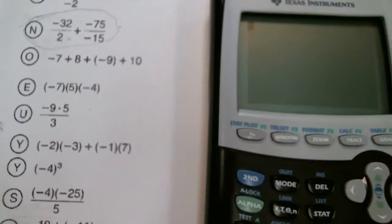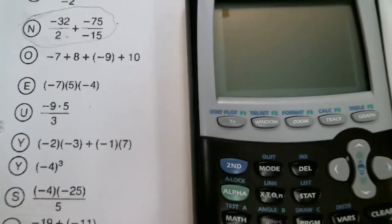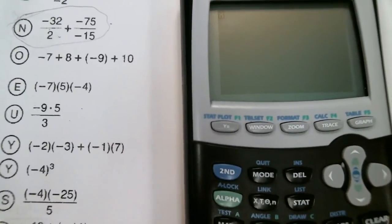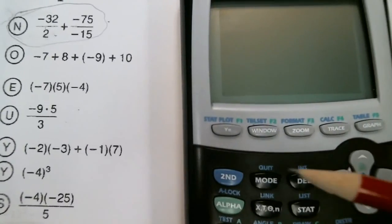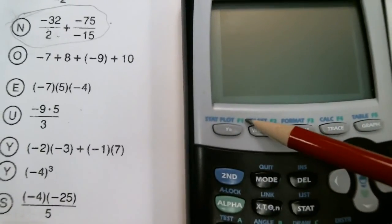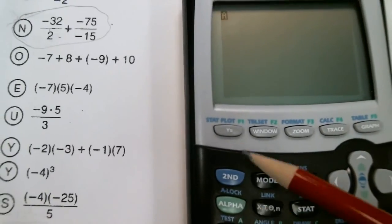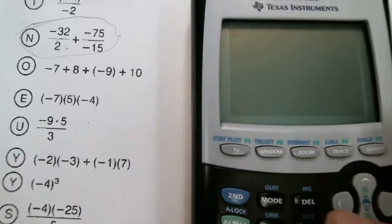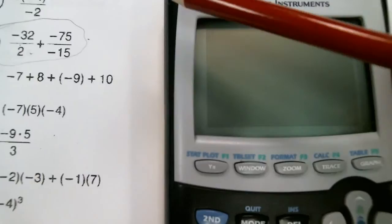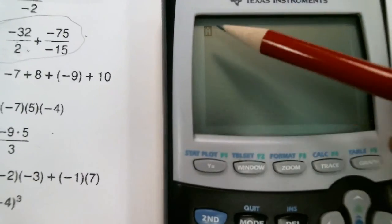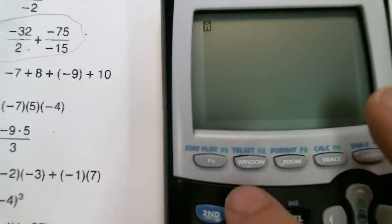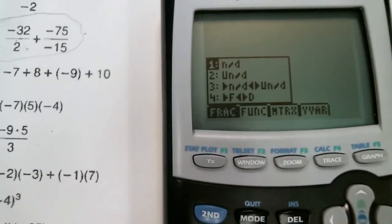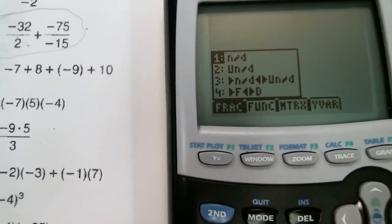We're going to press the green alpha key, then press the y-equals key. If you look right above the y-equals key in green, it says F1 — so alpha, then y-equals. When you've pressed the alpha key, you will see a blinking black 'A' on your screen. Now press y-equals — that very first option is what we want, which will allow us to enter a fraction.